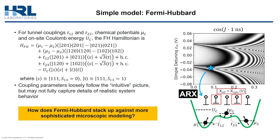Detuning in the chemical potentials mu leads to hybridization with doubly occupied states, since these states couple to the encoded one-one-one states through tunnel couplings T12 and T23. There is also an energy penalty U_c for doubly occupying a dot. We can sweep over these Fermi-Hubbard parameters to produce plots like the one on the right in this slide.